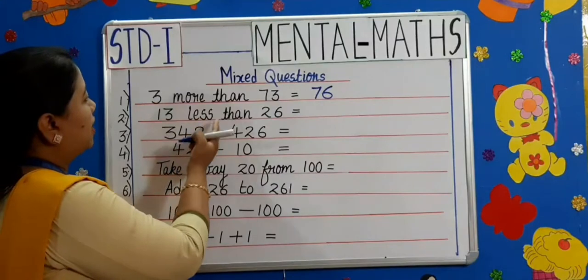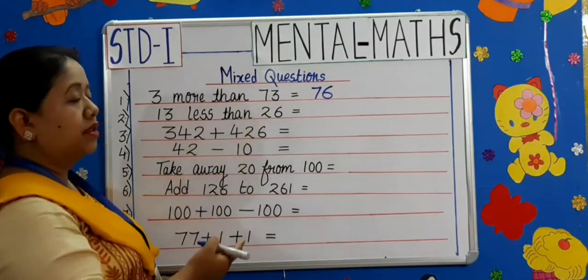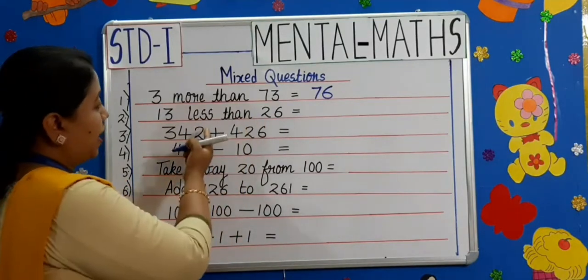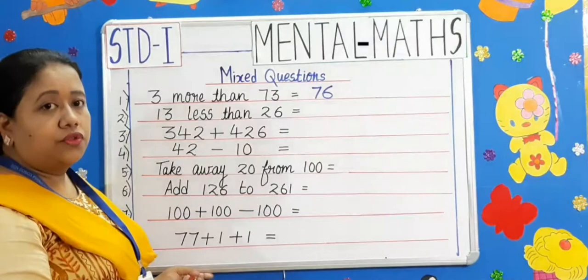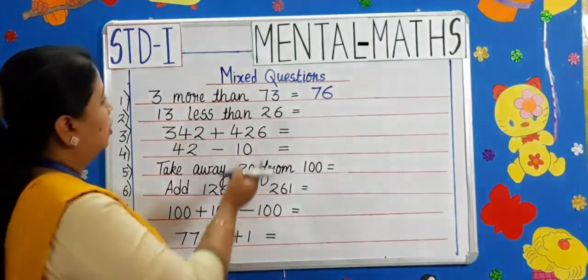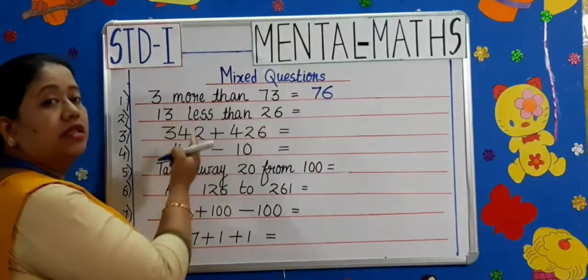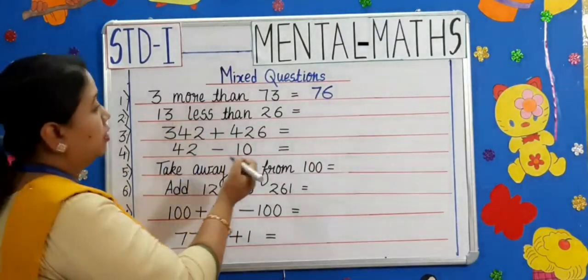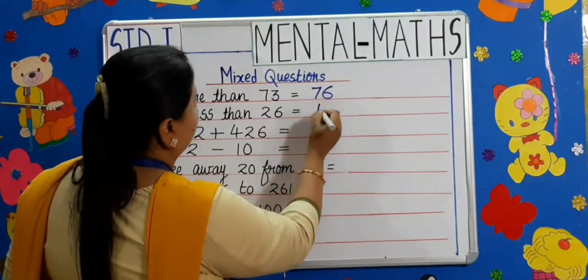Moving on to the second one: 13 less than 26. 'Less than' means here we have to do subtraction. 26 minus 13 is 13.